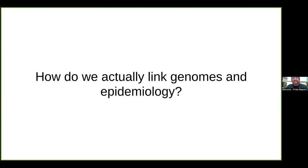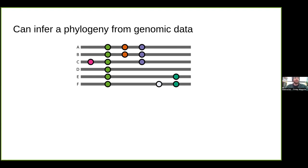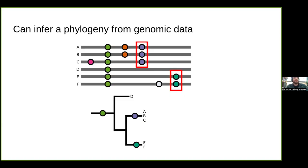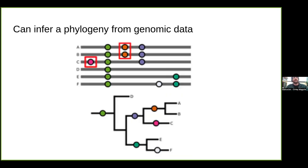So how do we link genomes and epidemiological inferences? If we have genomic data — say genomes A, B, C, D, E, F — we can look at mutations present and compare them. All have a green mutation; A, B, C have a purple mutation; E and F have a dark green one; D has neither. We put D on a separate branch, E and F form a branch, and we use those statistical models for sequence evolution to infer a phylogenetic tree.